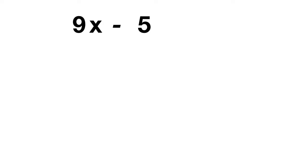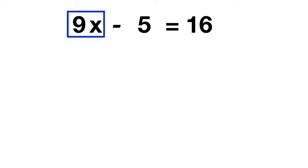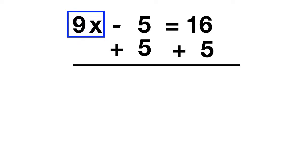Now let's do some of these together. Let's look at the equation 9x minus 5 equals 16. In this equation, I'm going to have to cancel both the 9 and the minus 5. Remember that we leave the 9x until later — always start with the addition and subtraction. Let's cancel the minus 5 by adding 5 to both sides. The minus 5 and plus 5 cancel out, leaving just 9x, and on the other side 16 plus 5 gives you 21.